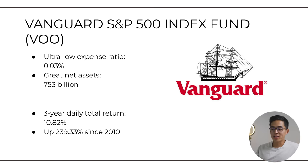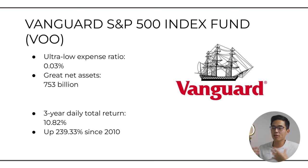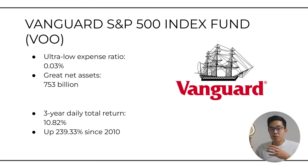Next we have the Vanguard S&P 500 Index Fund, VOO. This is the fund that I have the most of my money in. It basically tracks the S&P 500 — the 500 largest companies in the US. It also has a very low expense ratio of just 0.03%, great net assets, and a three-year daily total return of 10.82%. It's grown about 240% since its inception in 2010, though we've seen some pretty big pullbacks in the stock market recently.